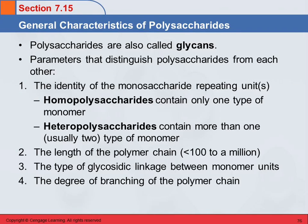Polysaccharides are next up in the chain length. They are also called glycans, so if you see the word glycan it just means polysaccharide. There are several different parameters that distinguish polysaccharides from each other. One is the identity of the monosaccharide repeating unit. These are polymers in which the monomers are monosaccharides like glucose and fructose, and what those units are makes the polysaccharides different.